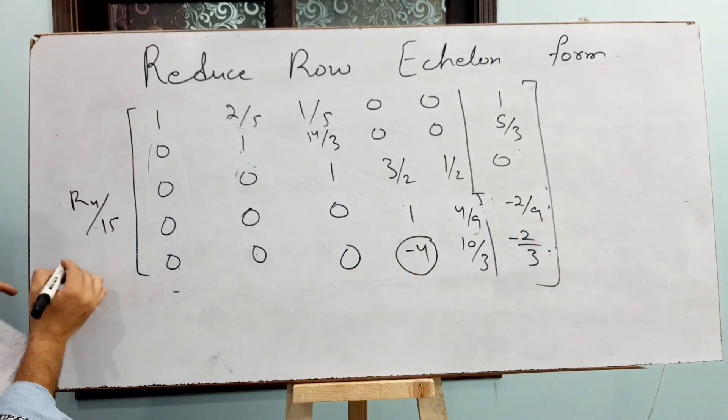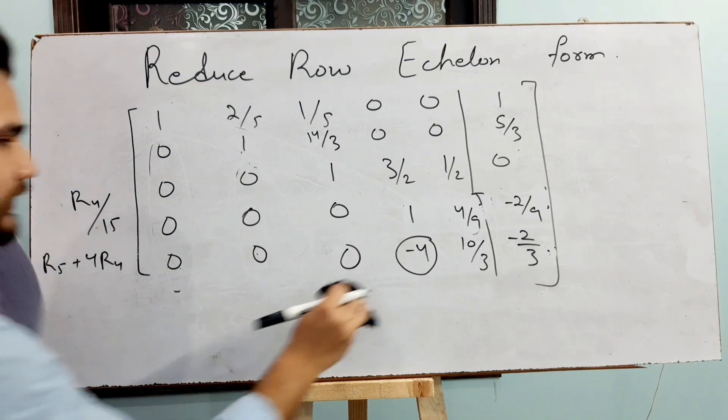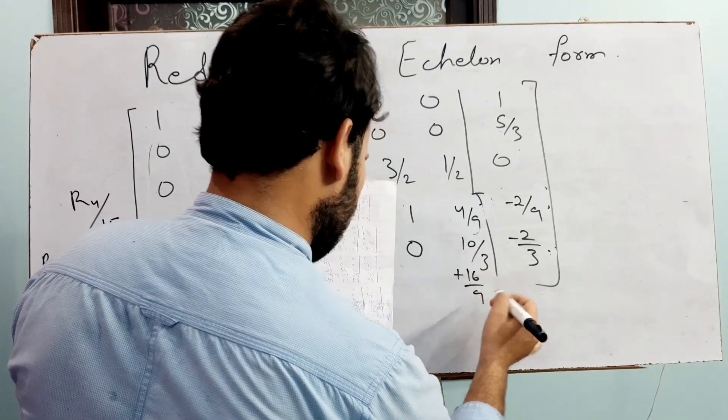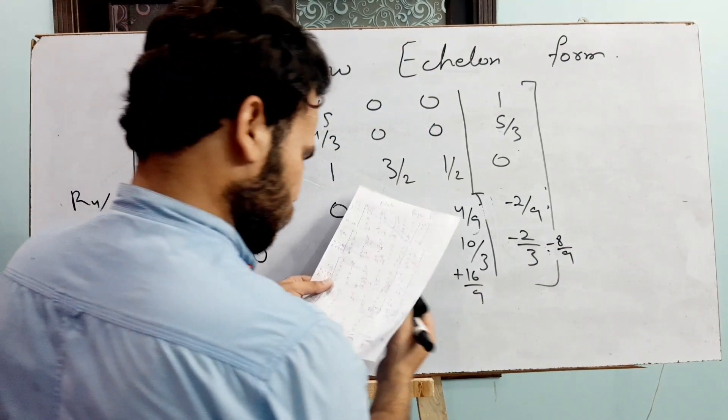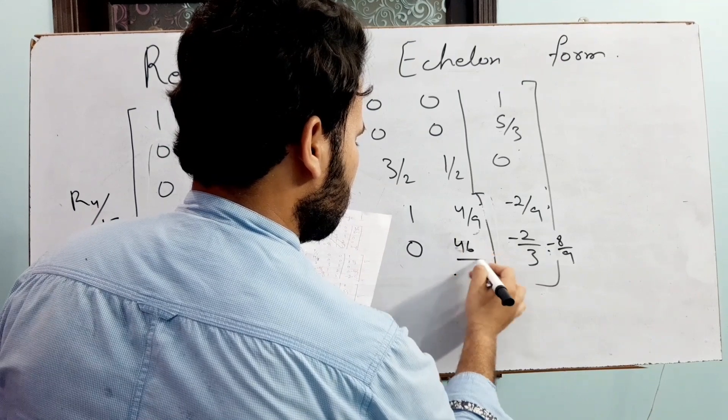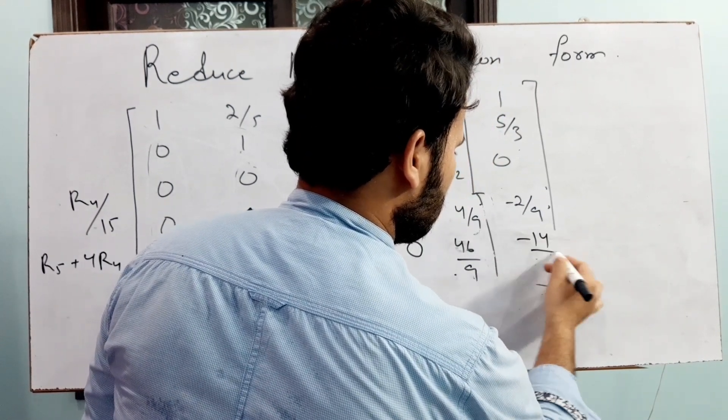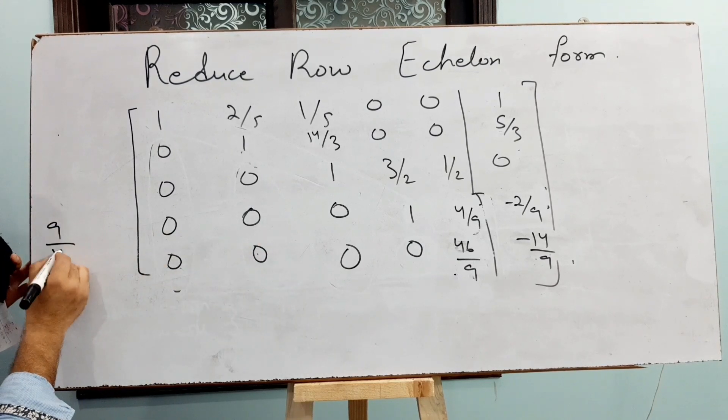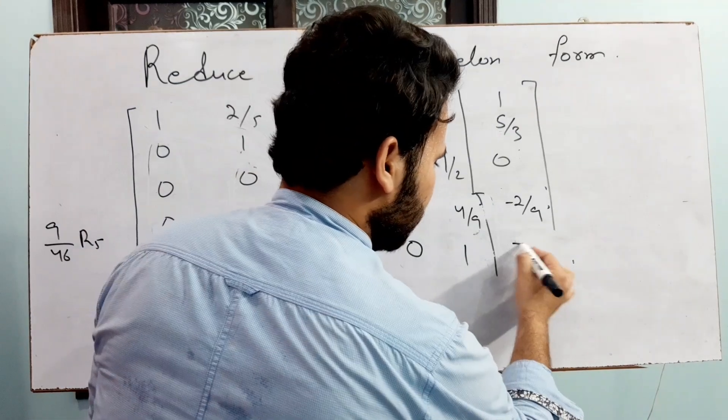Now, for making this entry should be 0, just R5 plus 4 times R4. Then this entry will be 0. So this will be 10 by 3 plus 16 by 9 and here will be minus 2 by 3 minus 8 by 9. Then this will be 46 by 9. Now this last entry is 1, so I am just multiplying 9 by 46 by R5. So this is 1 and this is minus 7 by 23.